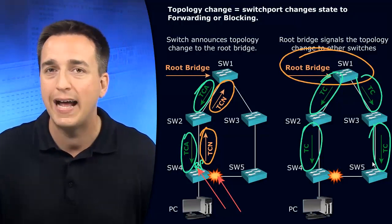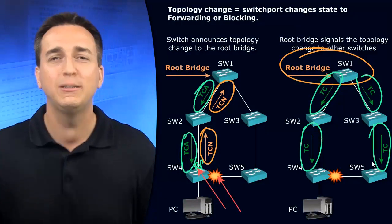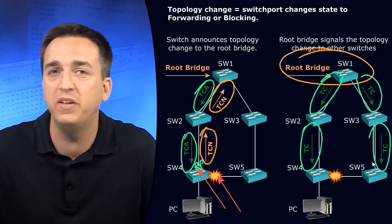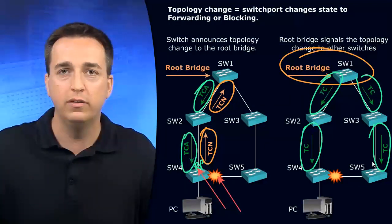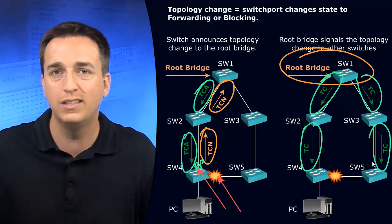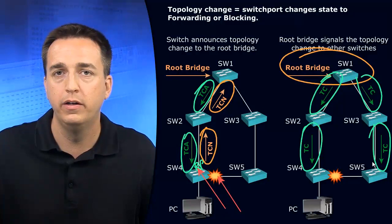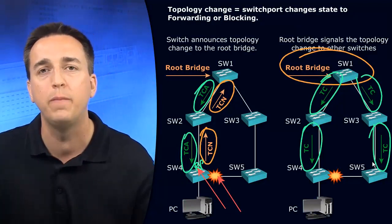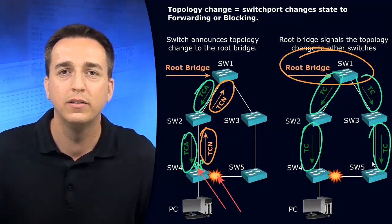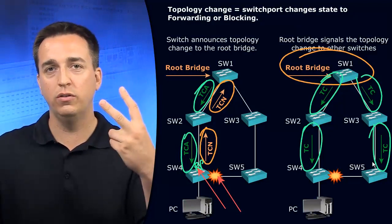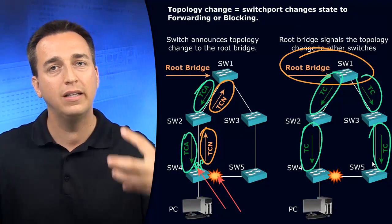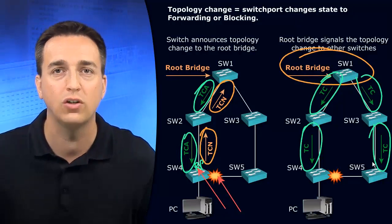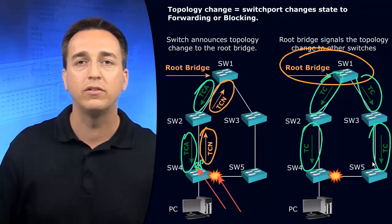Spanning tree protocol can converge the topology within 50 seconds. But the MAC address table at that point would potentially have old, stale entries that are no longer accurate. So when this topology change BPDU is sent out, the switches will take the entries in their MAC address table and drop them down to the forward delay timer, which is 15 seconds times 2 for a grand total of 30 seconds. As the switch is transitioning through the listening and learning states, the MAC addresses in the table are now only set with a timer of 30 seconds, so they will expire at the end of the learning state and newer MAC addresses can be learned.